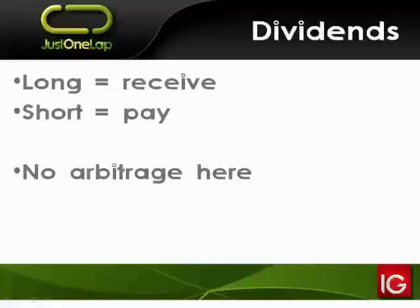Dividends: if you are long and own the share via CFD, you will receive the dividend. If you are short, you will have to pay the dividend. It's net-net: take our 15 rand share paying a 1 rand dividend. On ex-dividend day the share opens at 14 rand — you've lost 1 rand on price but receive the 1 rand dividend. Net net, flat. Conversely if you're short: you made 1 rand on the price move but paid 1 rand for the dividend — net net flat. There's no dividend arbitrage.